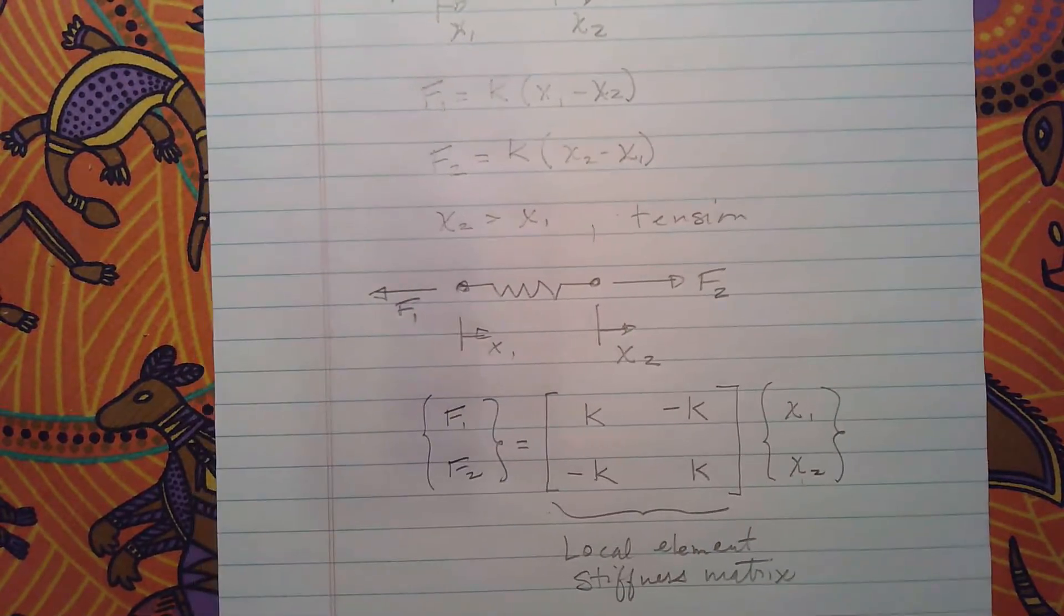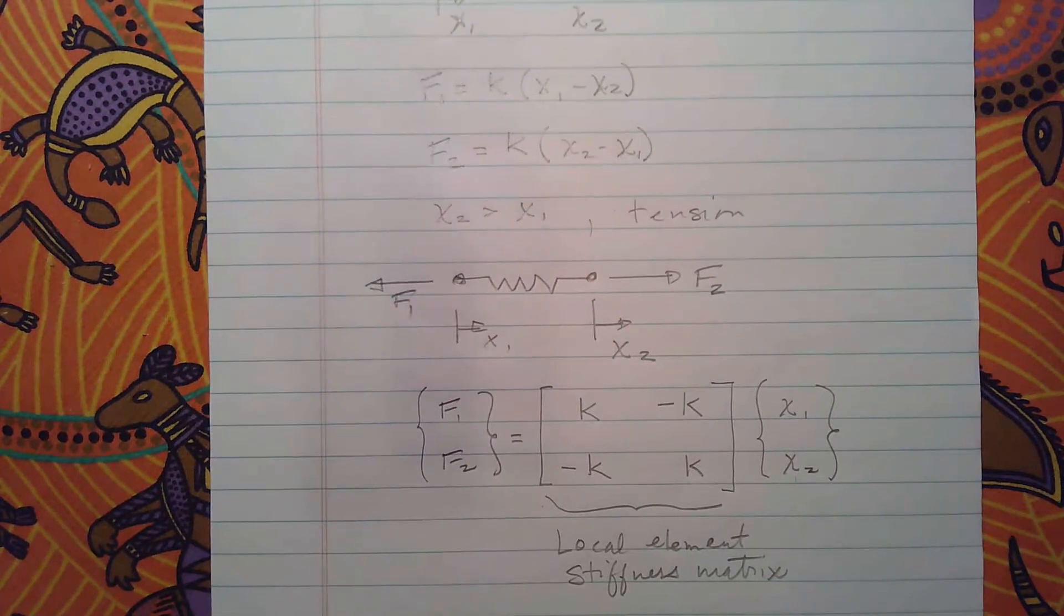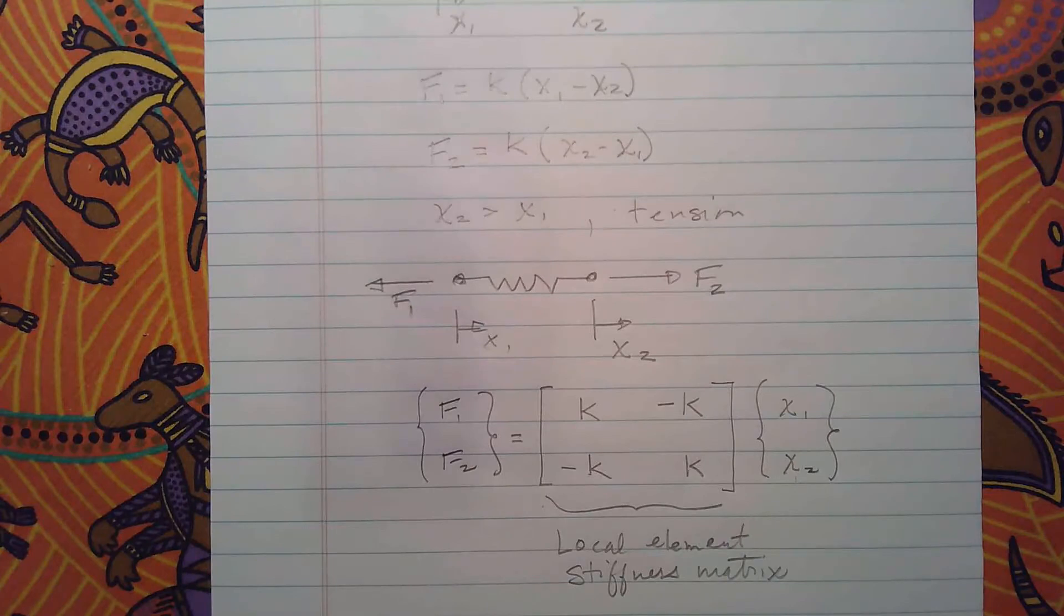Okay, and this is how we always start with finite element: we define an element and we define the stiffness relationship for that particular element in its own coordinate system. What I'd like to do is maybe do an example. So yes, I worked out an example before.